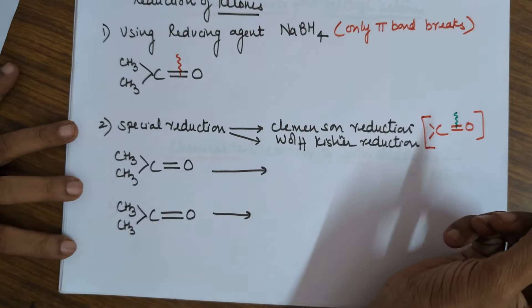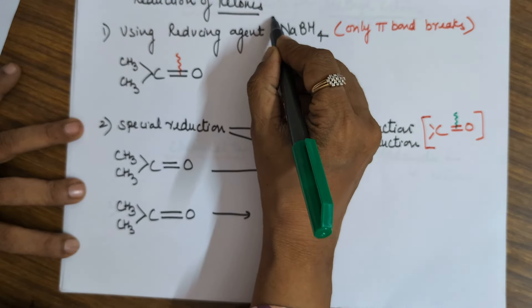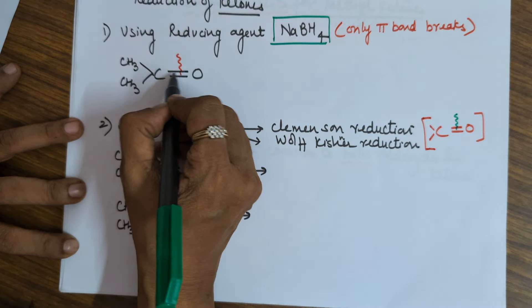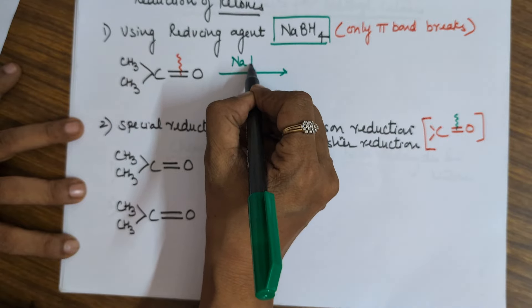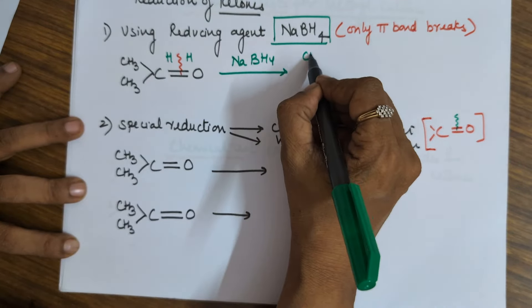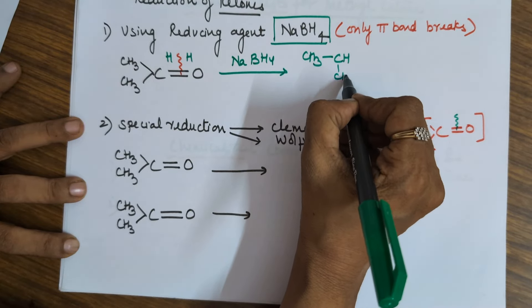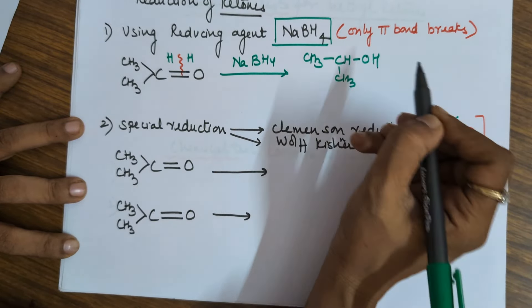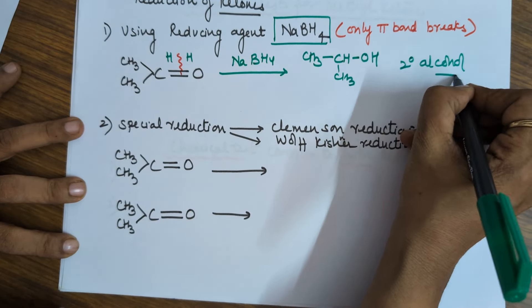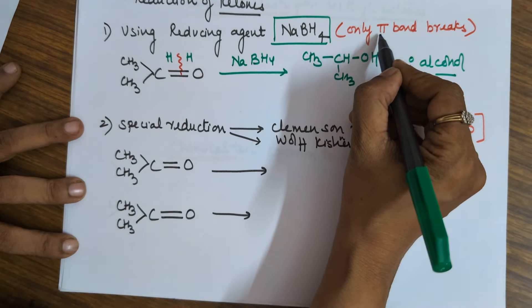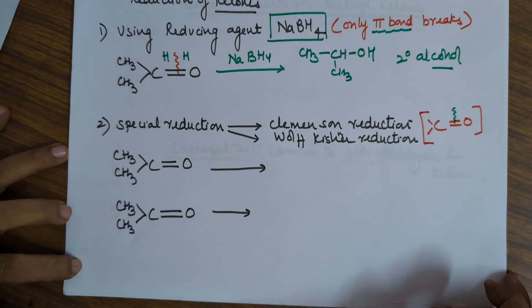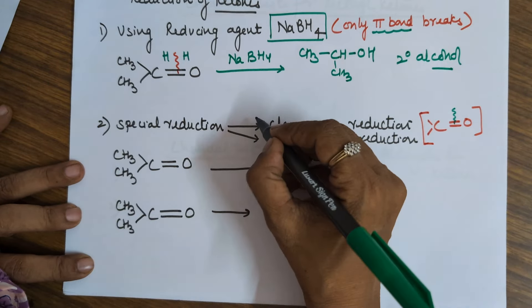Moving on to reduction of ketones. By using a reducing agent like sodium borohydride (NaBH4), it will cause only the pi bond to break. Your sodium borohydride provides hydrogen on both sides, which means you end up in CH3–CHOH–CH3, that is propan-2-ol. You end up in a secondary alcohol by using a reducing agent that breaks only the pi bond.